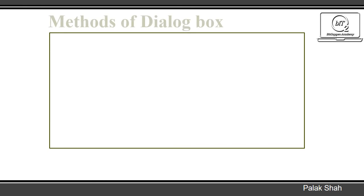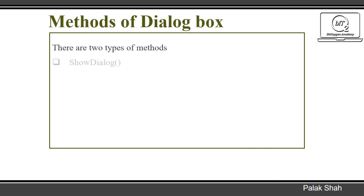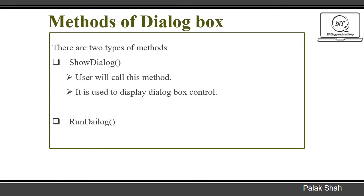Methods of dialogue box. There are two types of methods: ShowDialog and RunDialog. The ShowDialog method is used to display all the dialogue box controls at runtime. It returns a value of the type DialogResult. This method is explicitly called by the user.